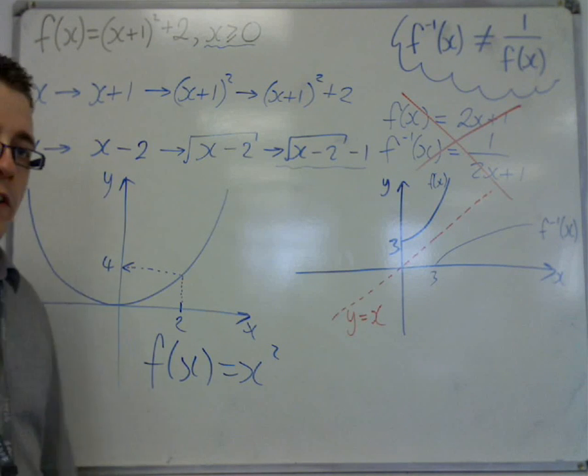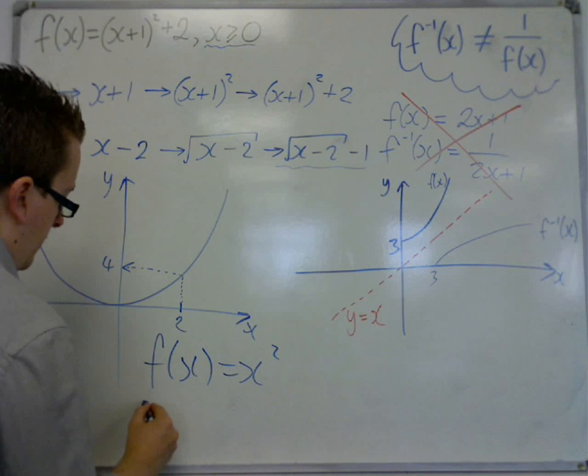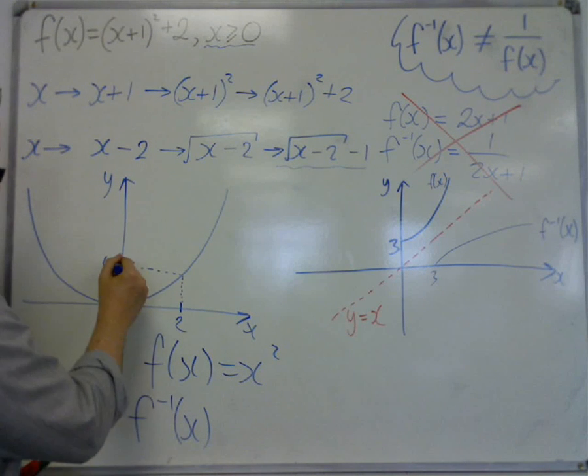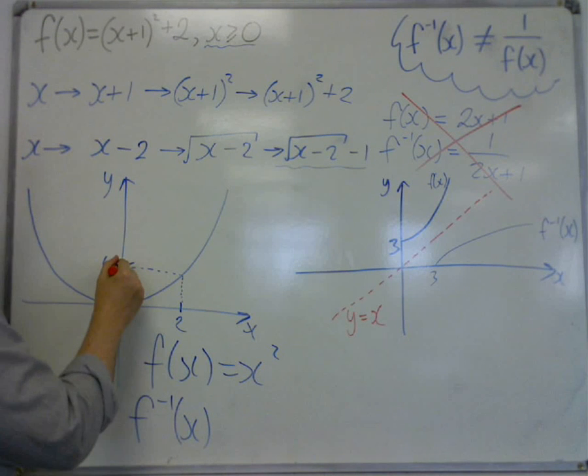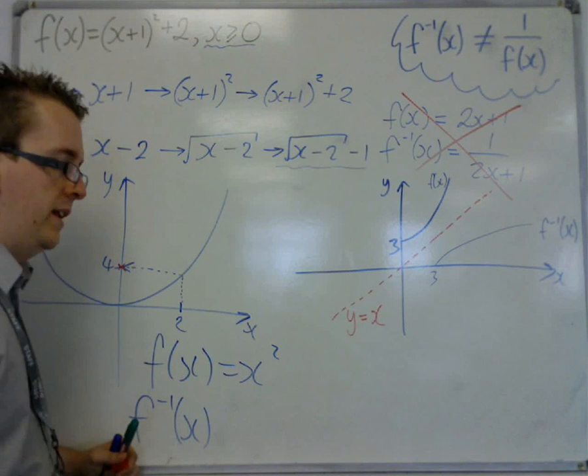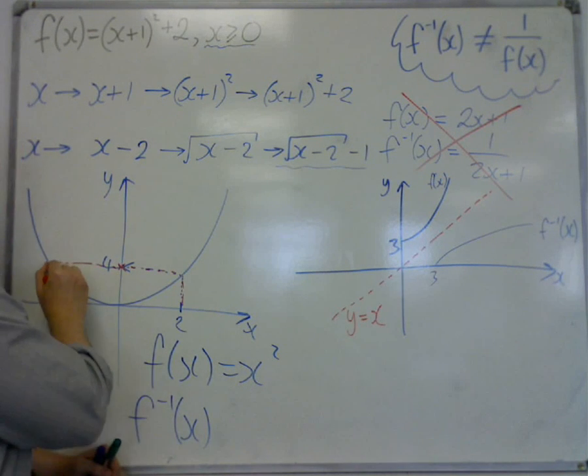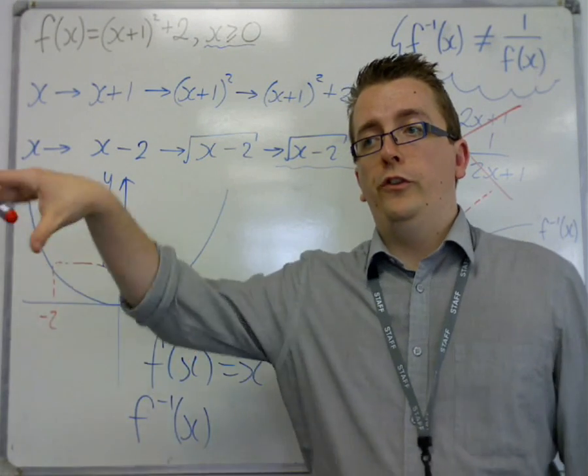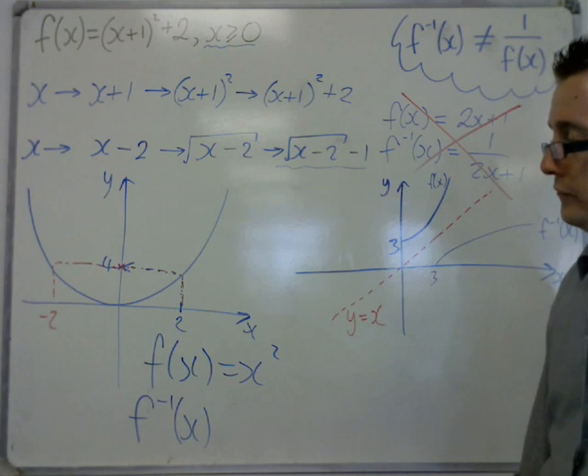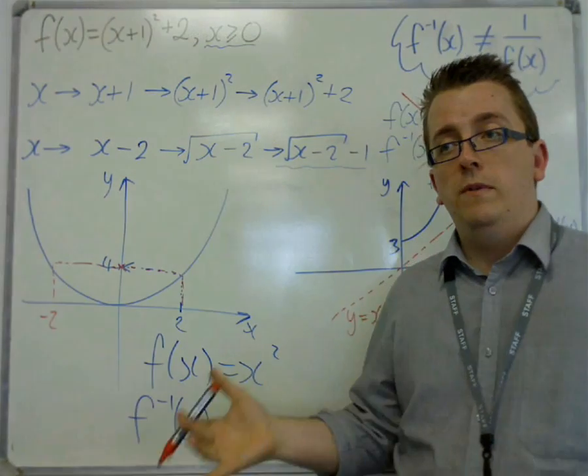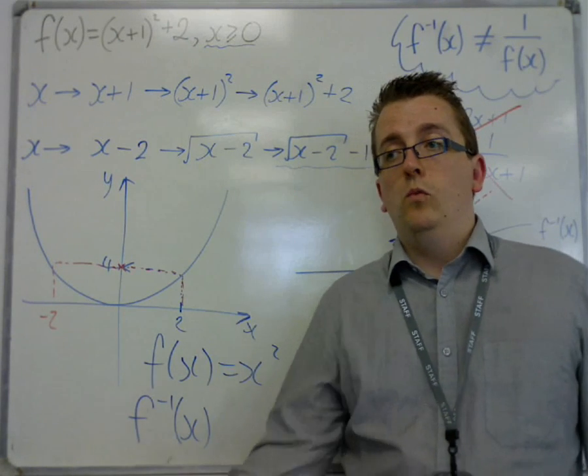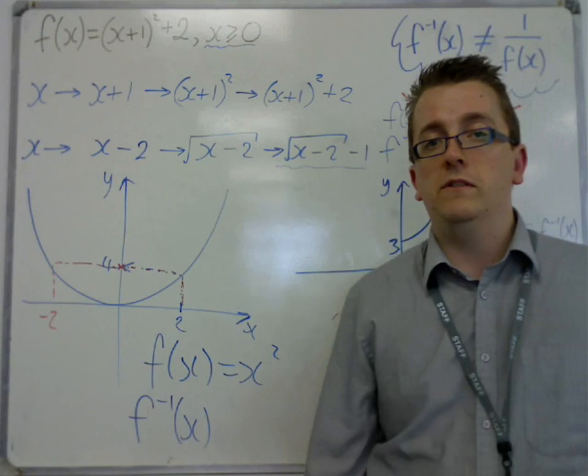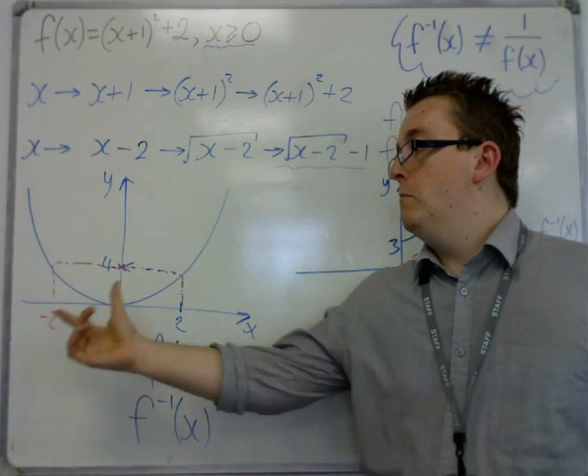The problem is, that if I then reverse the process, then f to the minus 1 of x, for example. Reverse the process. I put in 4. So I'm here. And then, well, how do I figure out what my value of x was at the beginning? Because it could either have been 2, or it could have been minus 2. And there's no way of saying. And you can't have a function going from 1 point to 2 points. In fact, a function from the very definition in one of our first videos was that you have one input, one output. You can't have one value going in, and then us getting two values coming out. So we cannot have an inverse function from any one graph.